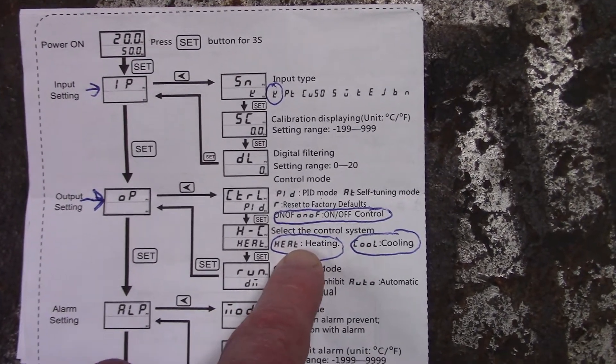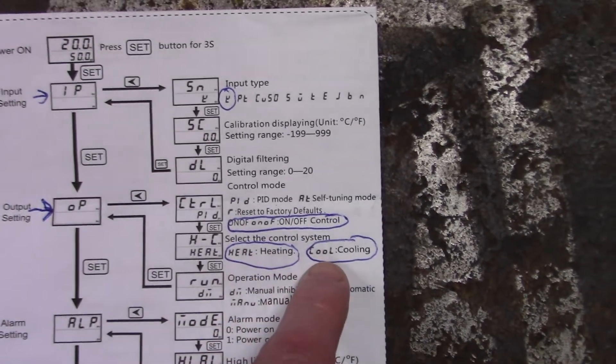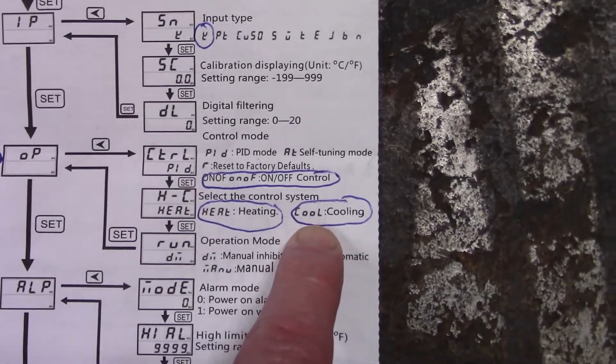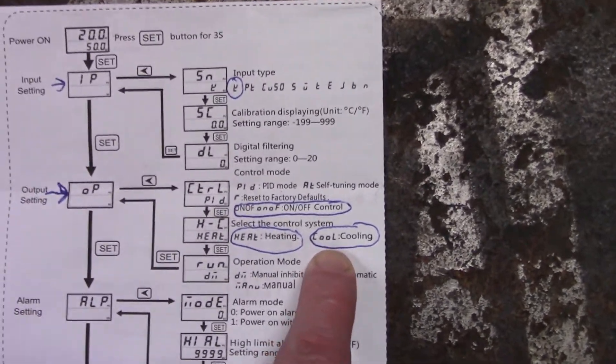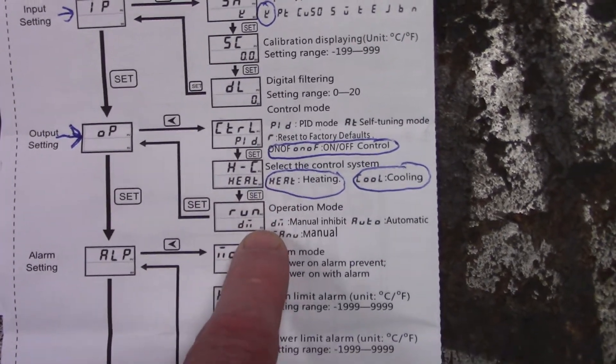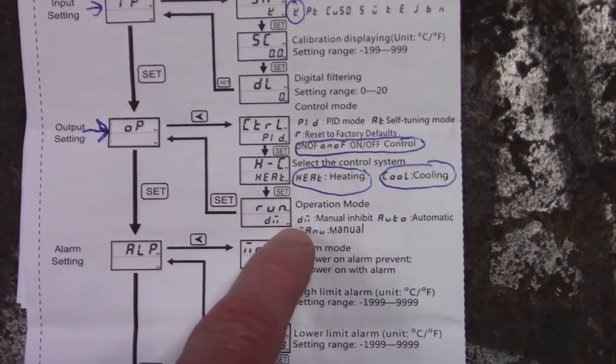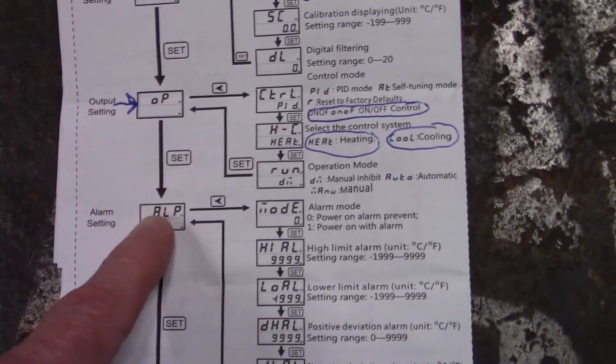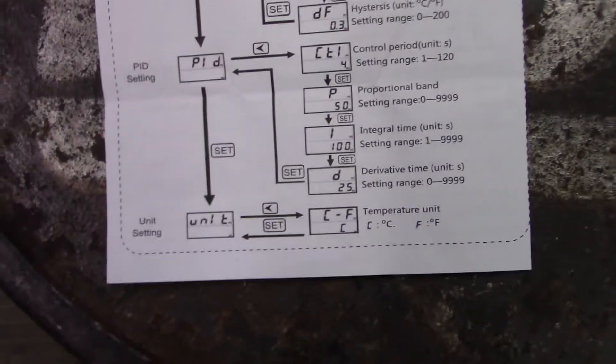Once you set that you hit set again, that will pop you down to HC which for the ashing control you're going to set on heat, and for the stack temperature inhibit you're going to set it on cool. The run mode doesn't really matter, and that's really all you got to do.